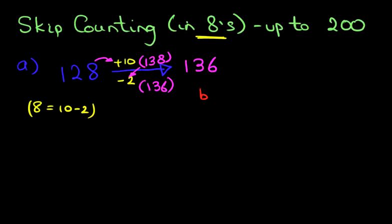Okay, let's look at our second example. This time we've got 152. And the same question. What number comes after 152 if we are counting in eights? The first step is, add 10 and then subtract 2.